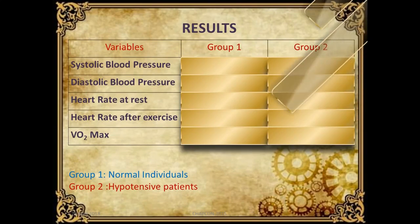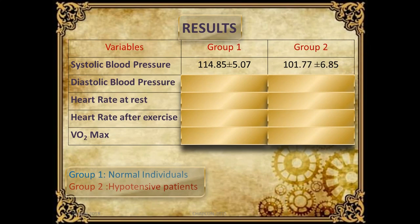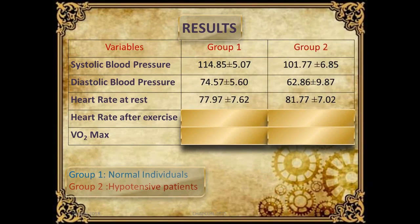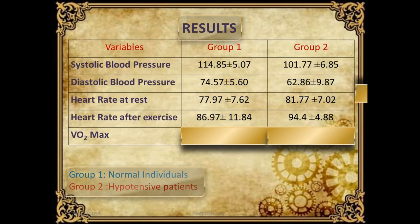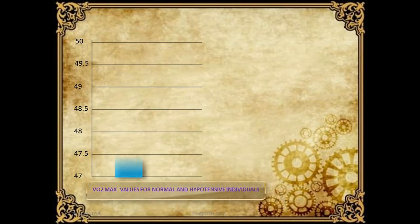Results: Group 1 denotes the normal individuals and Group 2 denotes the hypotensive individuals. SBP: 114.85 ± SD for Group 1; DBP: 74.57 in Group 1, 62.86 in Group 2. Heart rate at rest: 77.97 for Group 1, 81.77 for Group 2. Heart rate after exercise: 86.97 for Group 1, 94.4 for Group 2. VO2 max: 49.42 for Group 1 and 48.05 for Group 2.